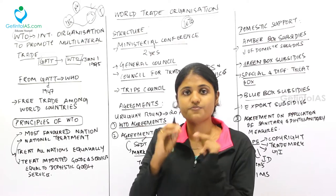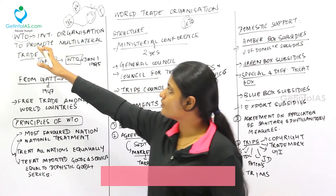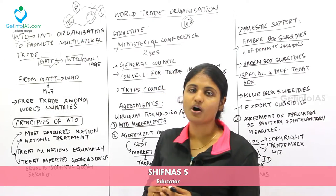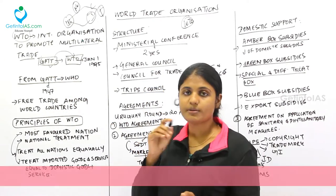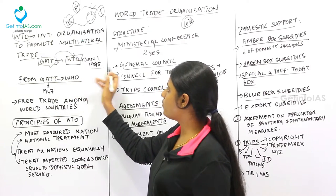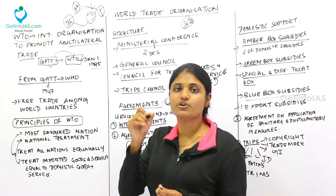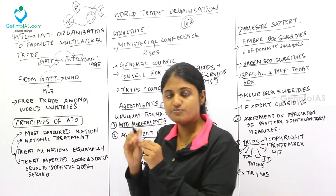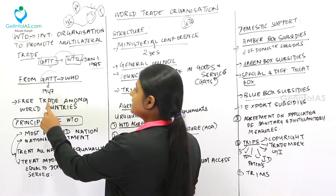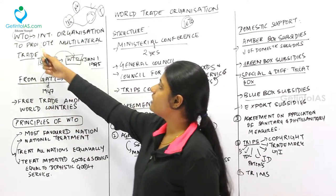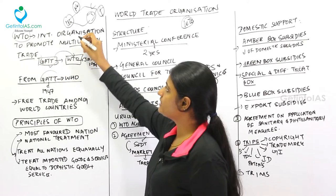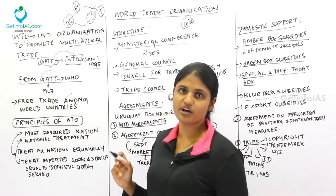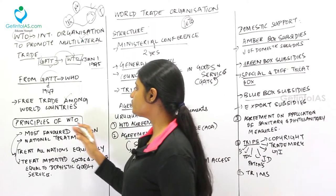Before WTO, there was another organization called GATT — General Agreement on Tariffs and Trade. The WTO is the successor of GATT, formed on January 1, 1995. GATT was formed in 1947 with the objective of promoting free trade among world countries, which is the same objective as the WTO — to promote multilateral trade.